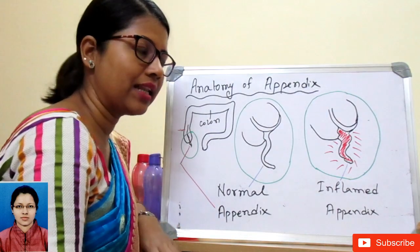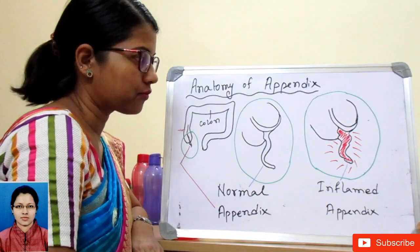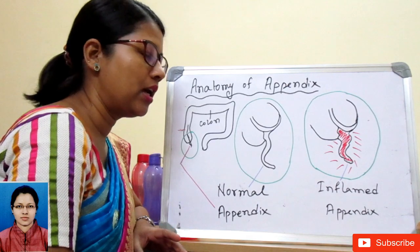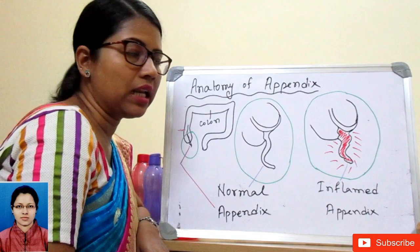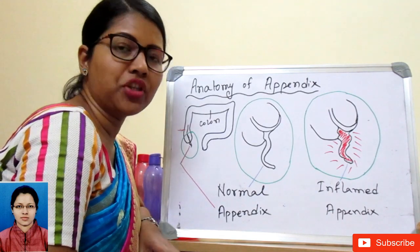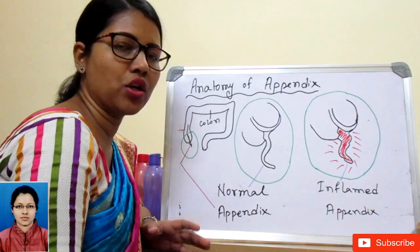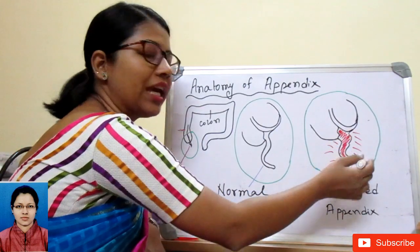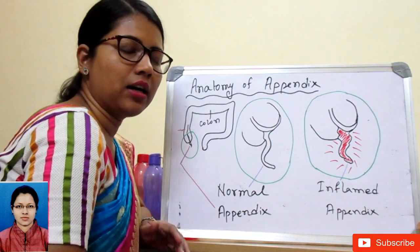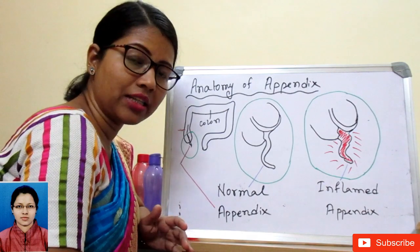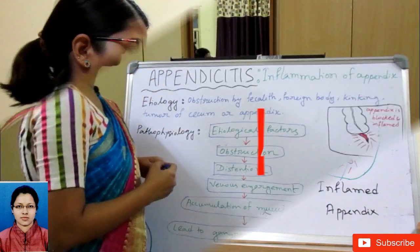Regarding the functions of the appendix, there is basically no known function — why it is there or what it is doing is not known. It is essentially a non-functioning organ, and due to some etiological factors it can become inflamed. If untreated, it can perforate and the patient can develop various types of complications.